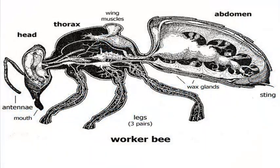Before we can consider any form of beekeeping, we must make some attempt to understand the nature of the creature we will be dealing with. The conventional approach to this subject invariably begins with pictures of individual bees. There are many books with diagrams and photographs of dissected honeybees showing how their anatomy is arranged and how parts of a dead bee appear under a microscope. I recommend you take a look through at least one of them, so you can have an idea of how all the bits fit together and what they do.